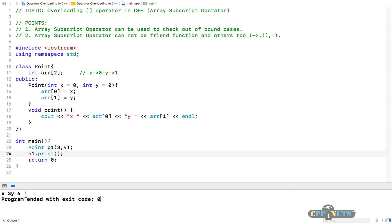Our output is x is 3 and y is 4. It's perfect. So till now we have not used any operator overloading. Let's suppose you want to do something like this, like p1's 0 position you want to initialize maybe 7.